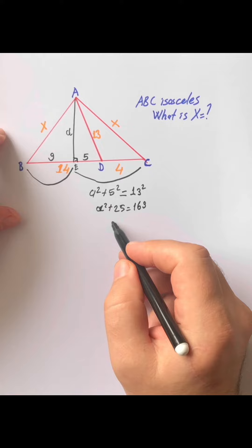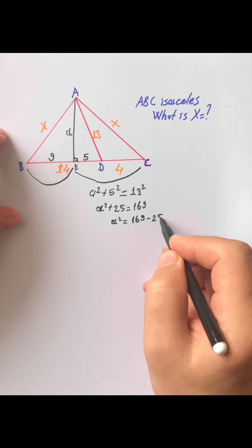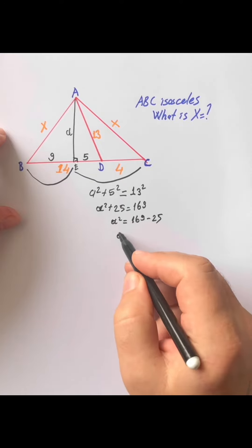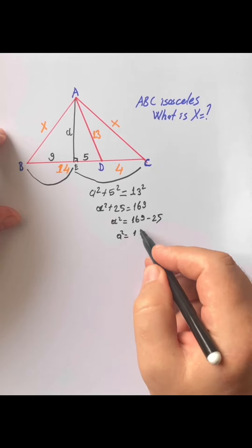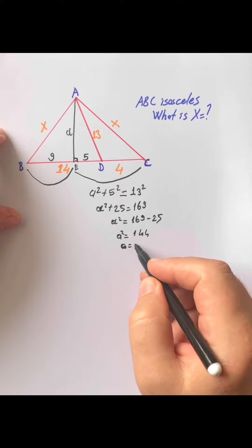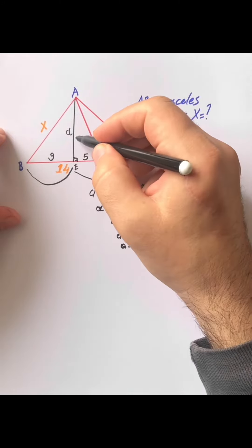A squared equals one hundred sixty-nine minus twenty-five. A squared equals one hundred forty-four. You find A, twelve units. I am going to write here twelve.